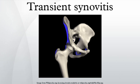Transient synovitis usually affects children between 3 and 10 years old. It is the most common cause of sudden hip pain and limp in young children. Boys are affected 2 to 4 times as often as girls. The exact cause is unknown. A recent viral infection or a trauma have been postulated as precipitating events, although these are reported only in 30% and 5% of cases, respectively.